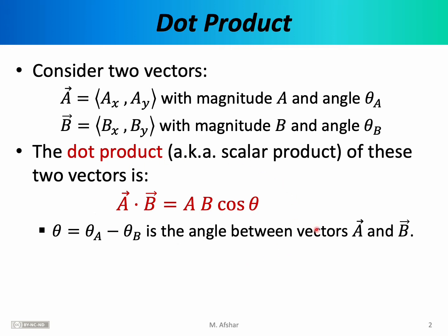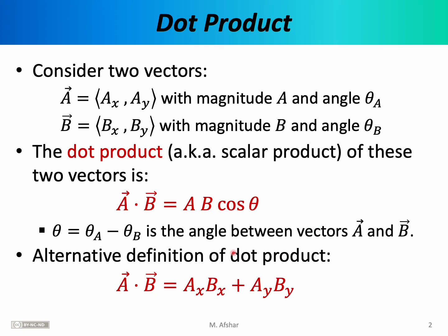That is one way of calculating the dot product. There is an alternative definition which relies not on magnitudes and orientations, but on x and y components. Another way to calculate the scalar product is to multiply their x components, multiply their y components, and then add the results. Notice that in both cases, what we're getting is a real number, a scalar quantity. So we're taking two vectors and by multiplying them we're getting a scalar, not a vector as you might expect.